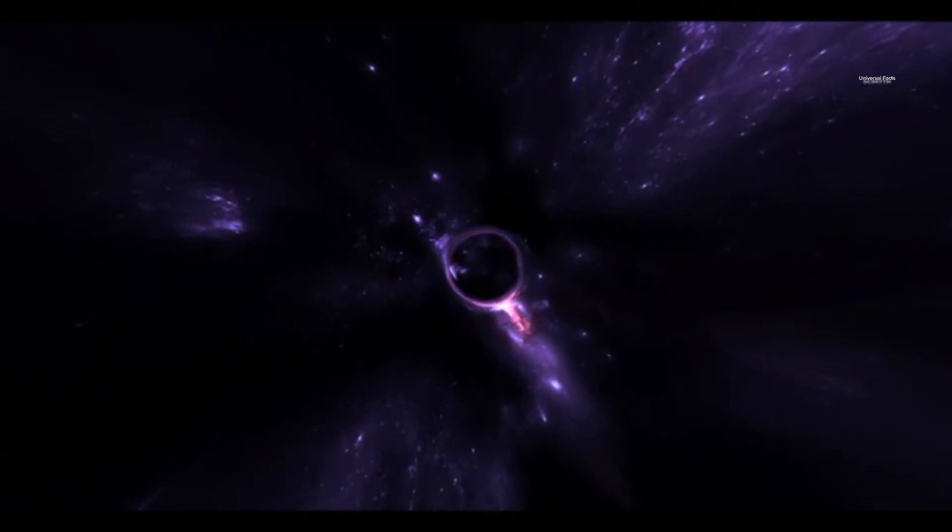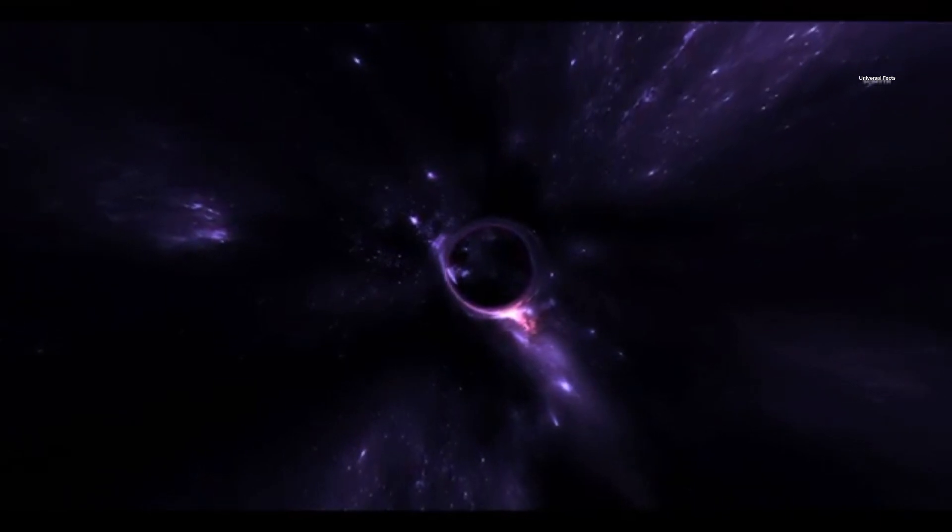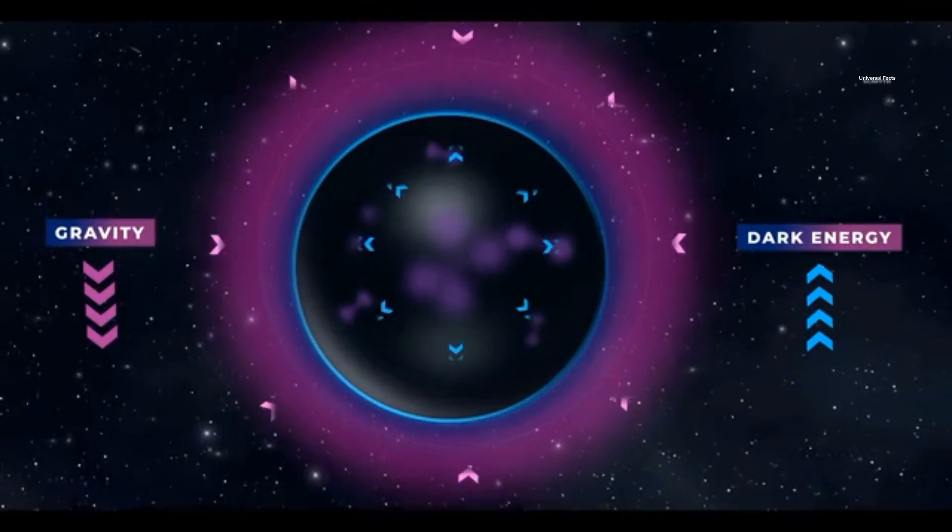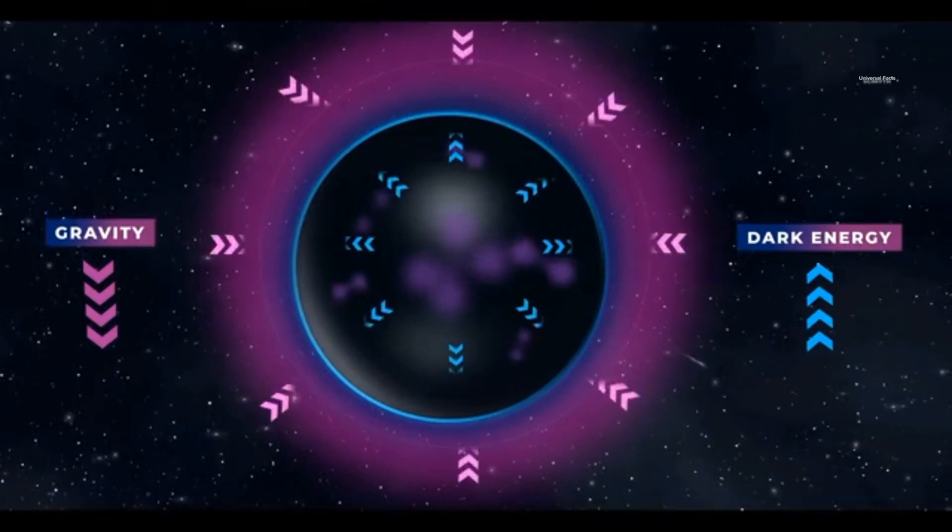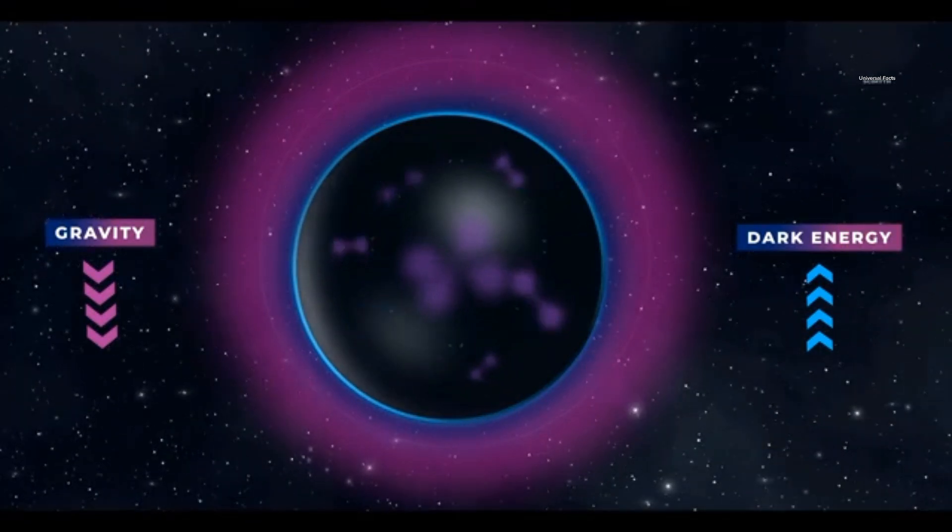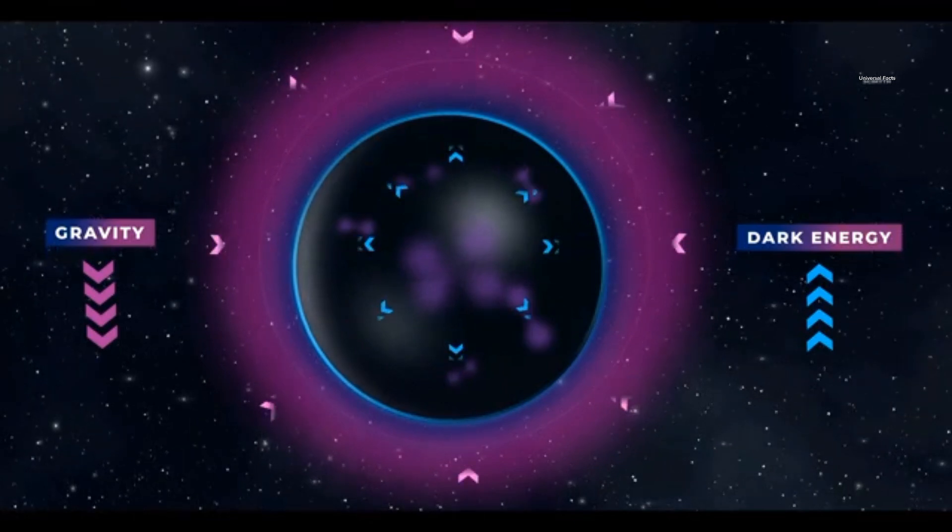Scientists hypothesize that this dark energy is present inside gravistars, acting to counterbalance the star's gravitational force. While gravity pulls the outer layers inward, dark energy expands the space within the star, effectively canceling out gravity. This delicate balance allows gravistars to remain stable.